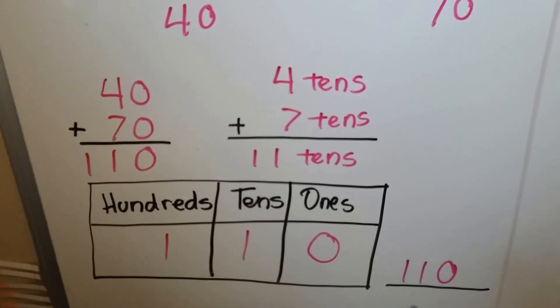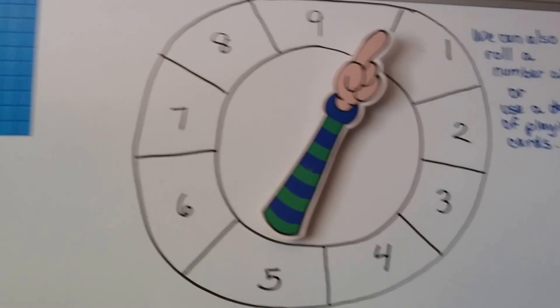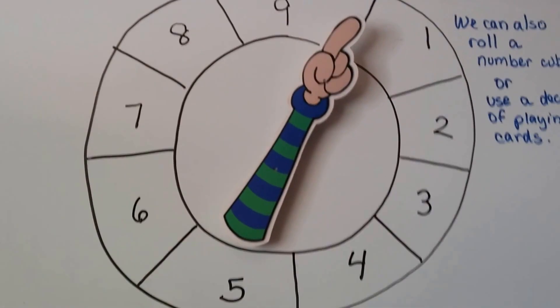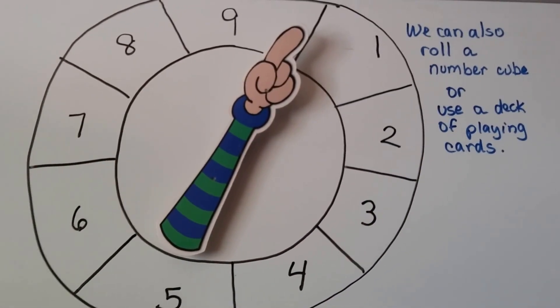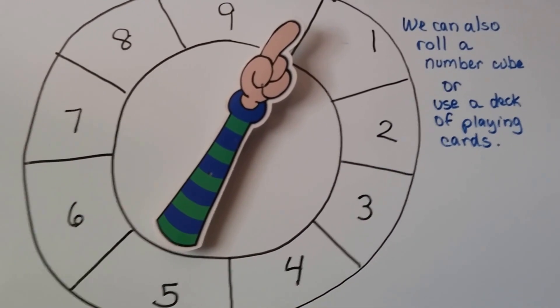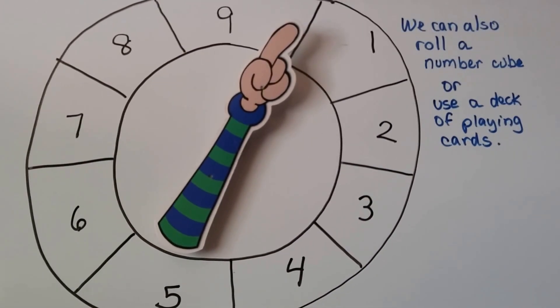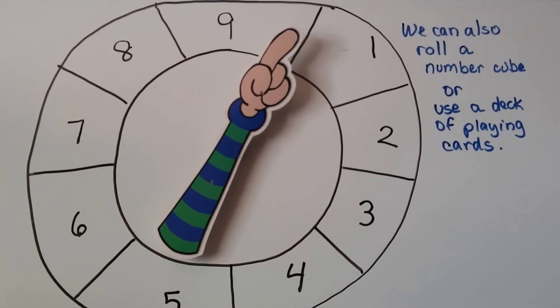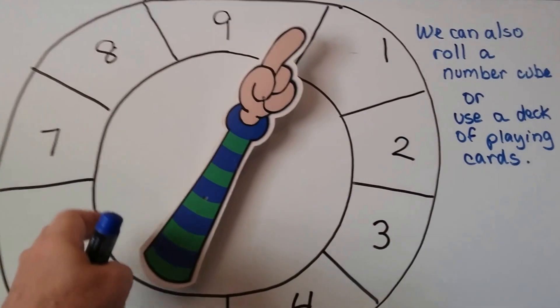I've got a spinner here. If you don't have a spinner, you can also use a number cube or dice, or a deck of playing cards. You could pull a card face-down and that's how many tens you have. So let's try spinning.